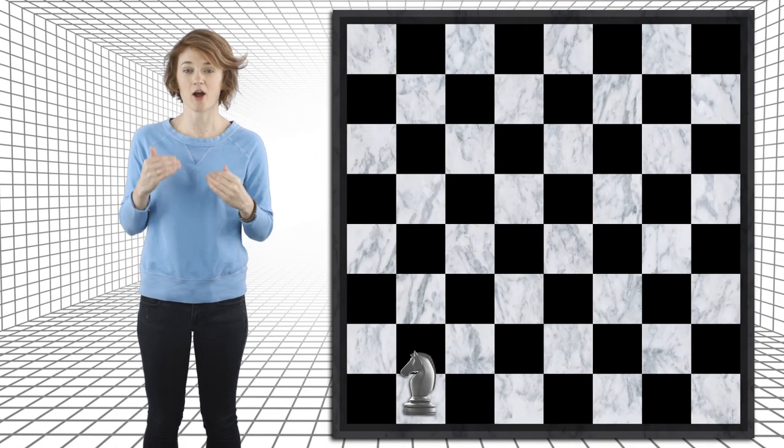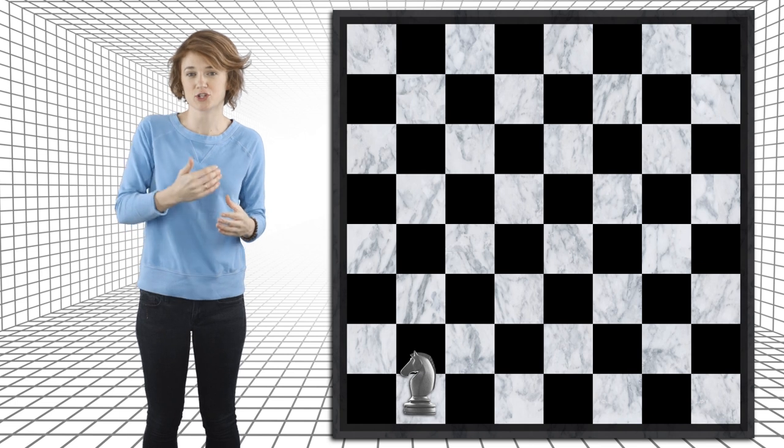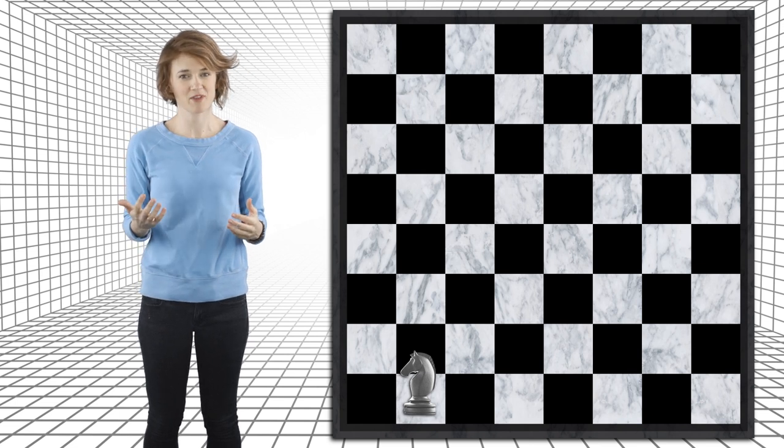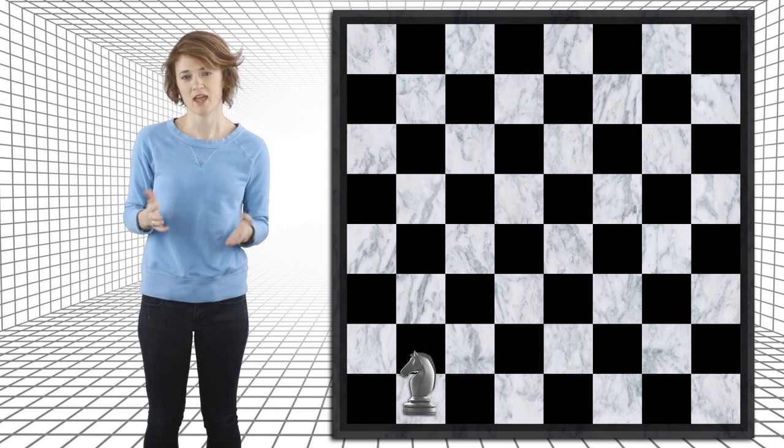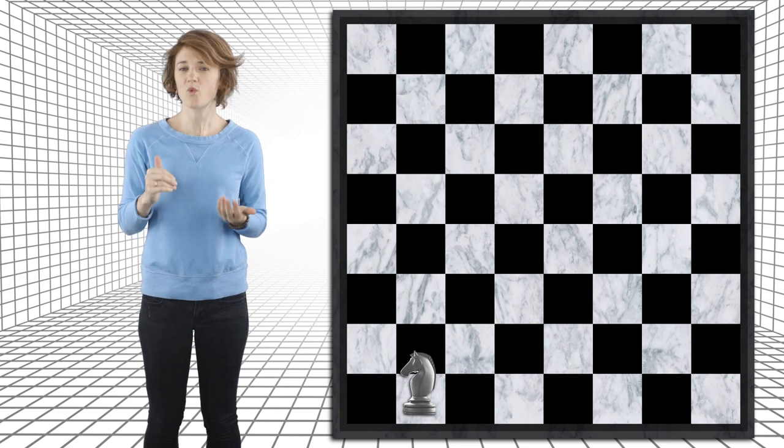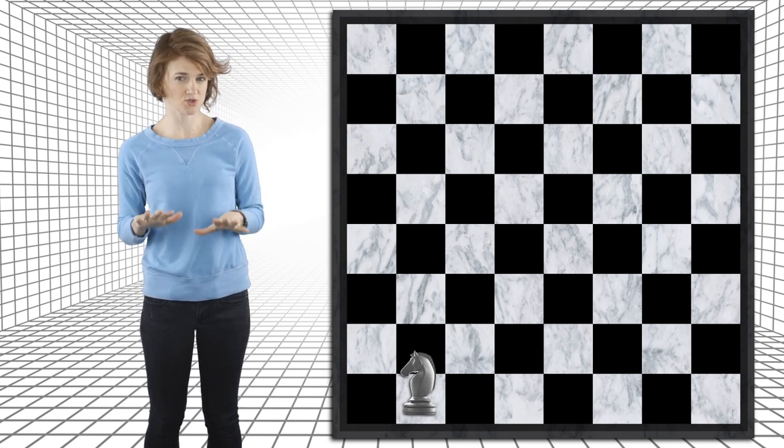Let's go back to the knight randomly hopping around a chessboard. Now that we know what a stationary distribution is, and how it relates to the time it takes to return to a given state in a Markov chain, we can solve our knight problem. In order to answer our question, on average, how many hops will it take before a knight returns to its original square, we need to find the stationary distribution and use the theorem. If a knight hops around randomly for a really long time, what fraction of its time will it spend on each square?